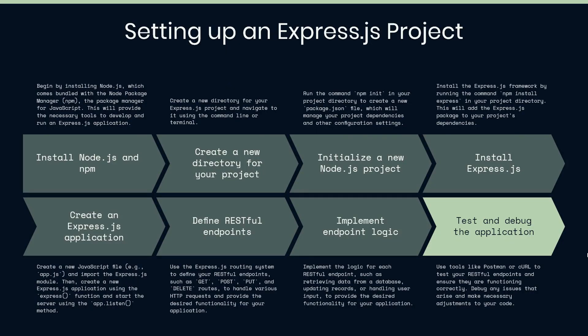To set up an Express.js project, we need to make sure that we have Node.js installed already. When we install Node.js, it's going to install npm — the Node Package Manager — as well. Then we need to create a directory for our project and initialize the Node.js project using npm init. That's basically a command we can run on the command line.